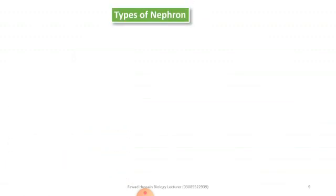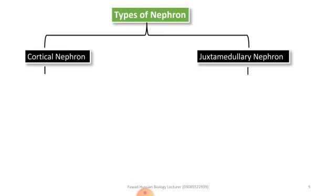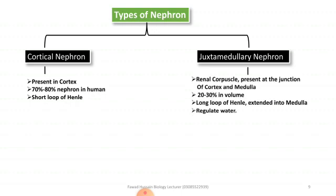The next point is the types of nephron. There are two main important types: the first is the cortical nephron and the second is the juxtamedullary nephron. The cortical nephron is present in the cortex — the upper or boundary side of the kidney — and represents 70–80% of the nephrons in our body. Its loop of Henle is short as compared to the juxtamedullary nephron. The renal corpuscle of the juxtamedullary nephron is present at the junction of the cortex and medulla.